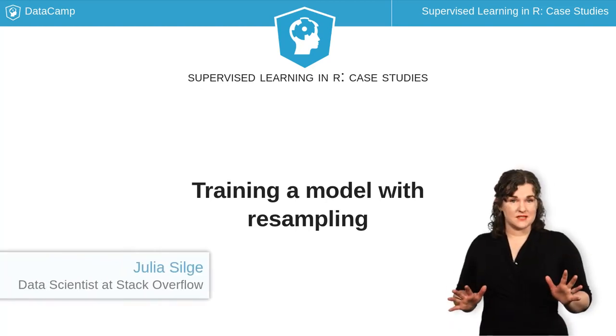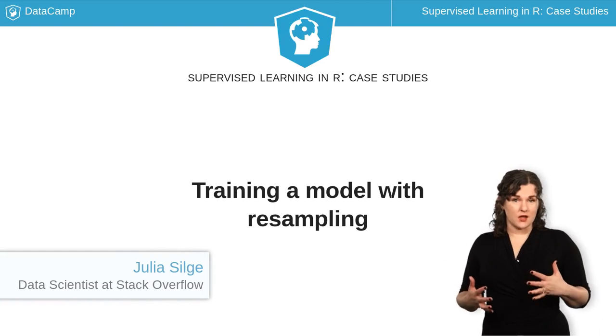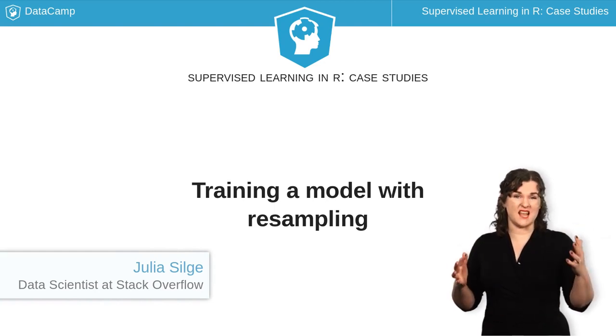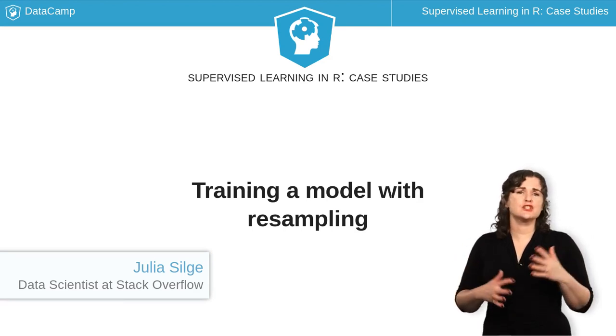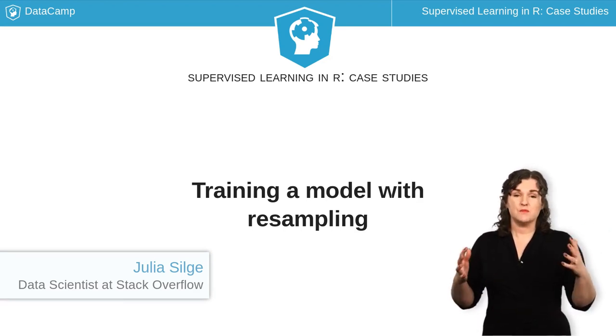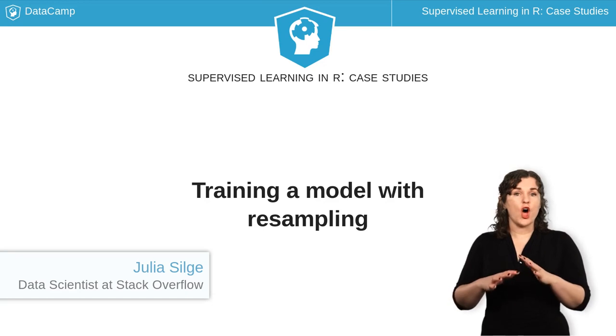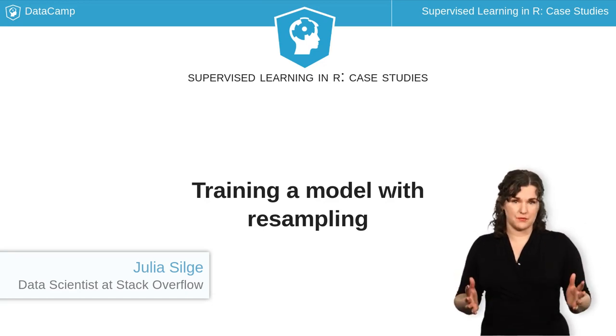You just built and then evaluated models that were trained one time on the whole training set at once. Data scientists have come up with a slew of approaches to build models that perform better than this approach, and a lot of important ones fall under the category of resampling.